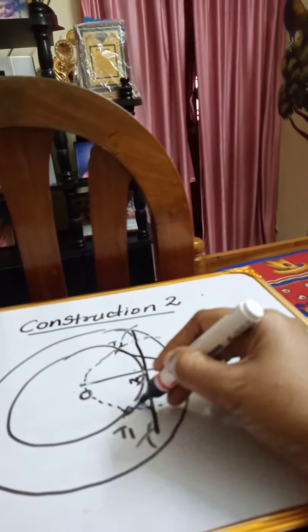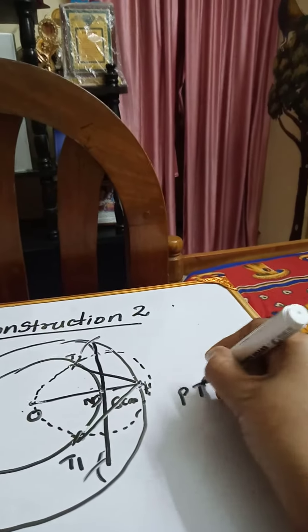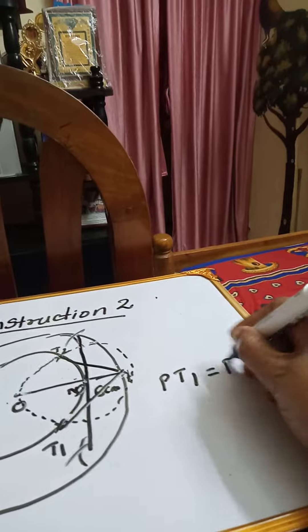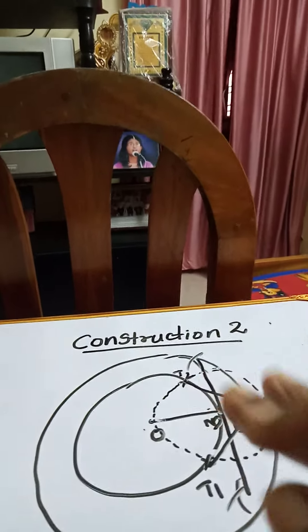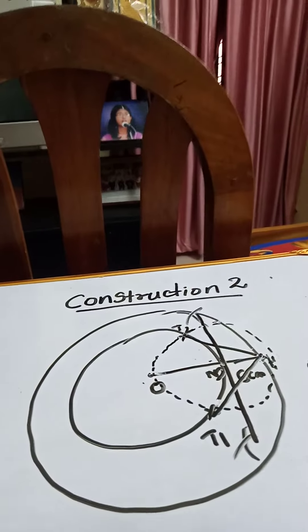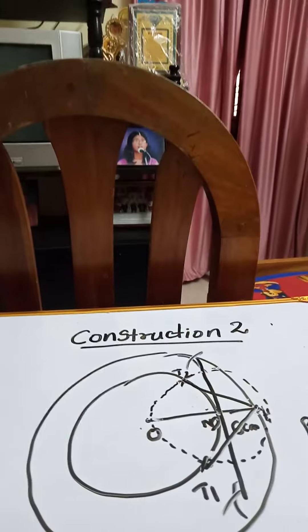Join PT1 and PT2. These are the two tangents. PT1 equal to PT2, and measure the length of the two tangents. This is the method of drawing equal tangents from one circle to another circle if they are concentric. Thank you.